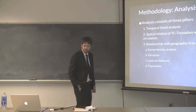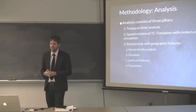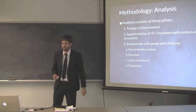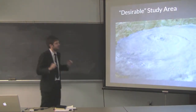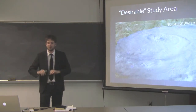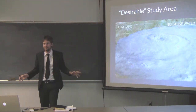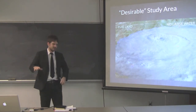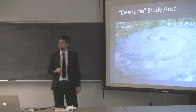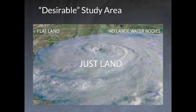The methodology consists of three main pillars: temporal analysis, the spatial relationship in terms of bearing to the center, and the relationship with geographic features such as kernel density analysis performed on elevation, land use, and population. To frame things, imagine putting a hurricane over the center of the U.S. — the Great Plains — flat land with no large water body, no immediate moisture sources, open grass fields or agriculture. Not much land use diversity. That's very different from Florida.